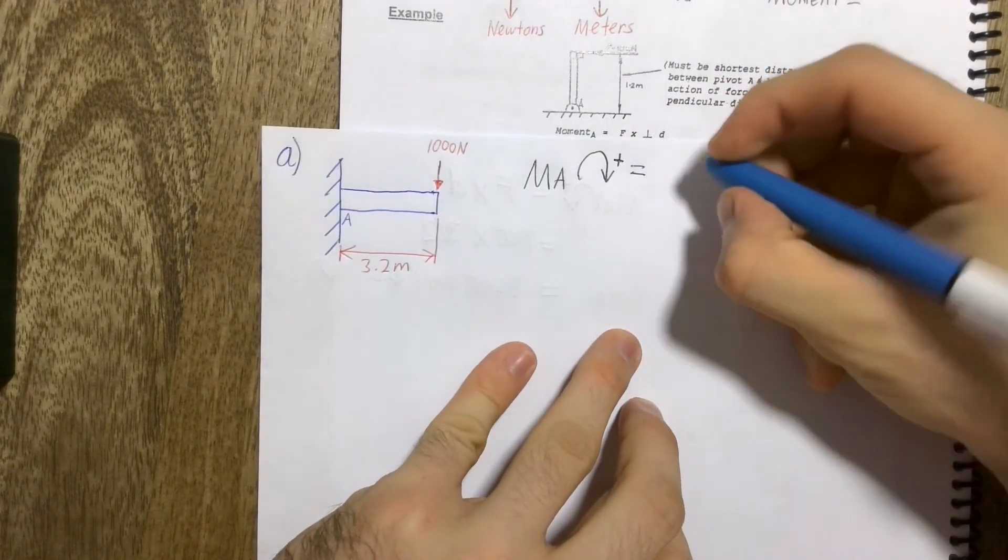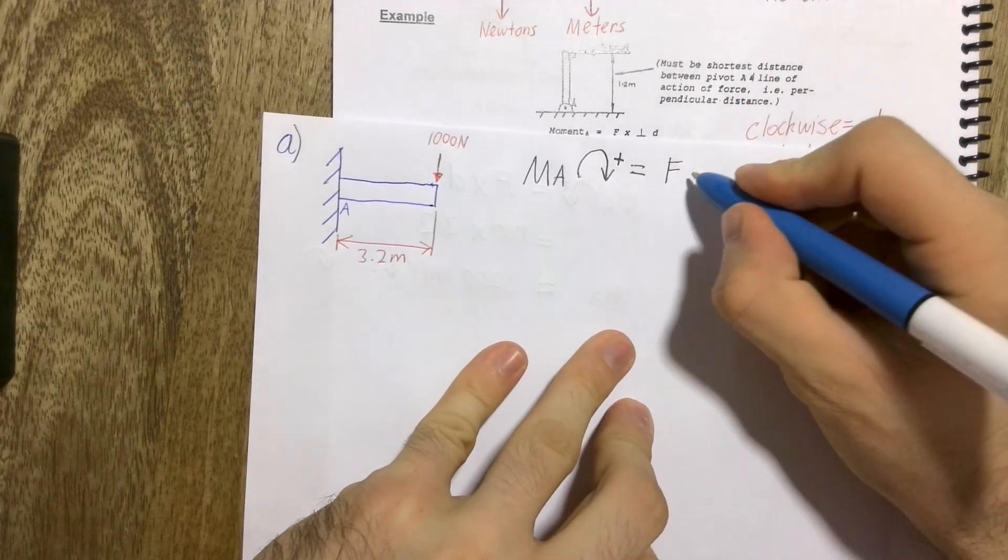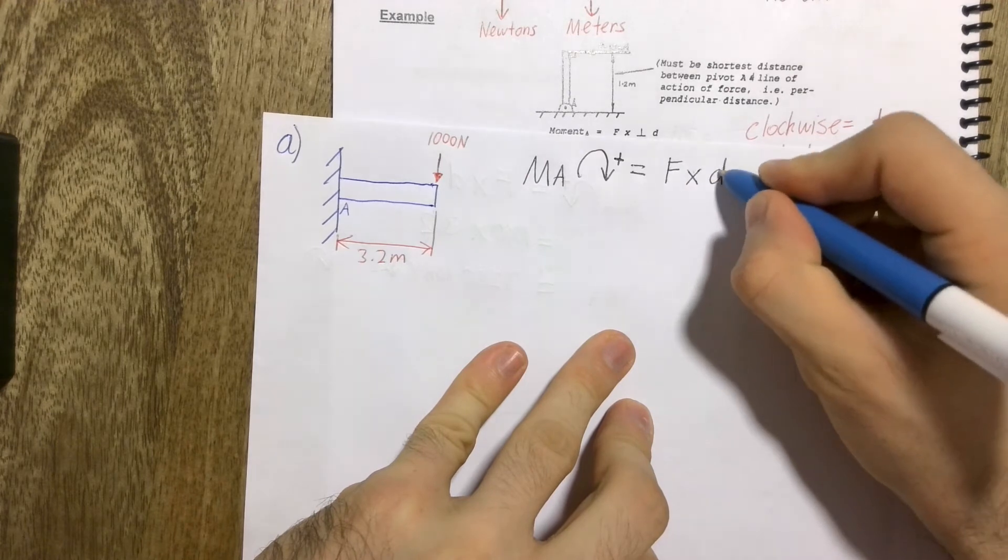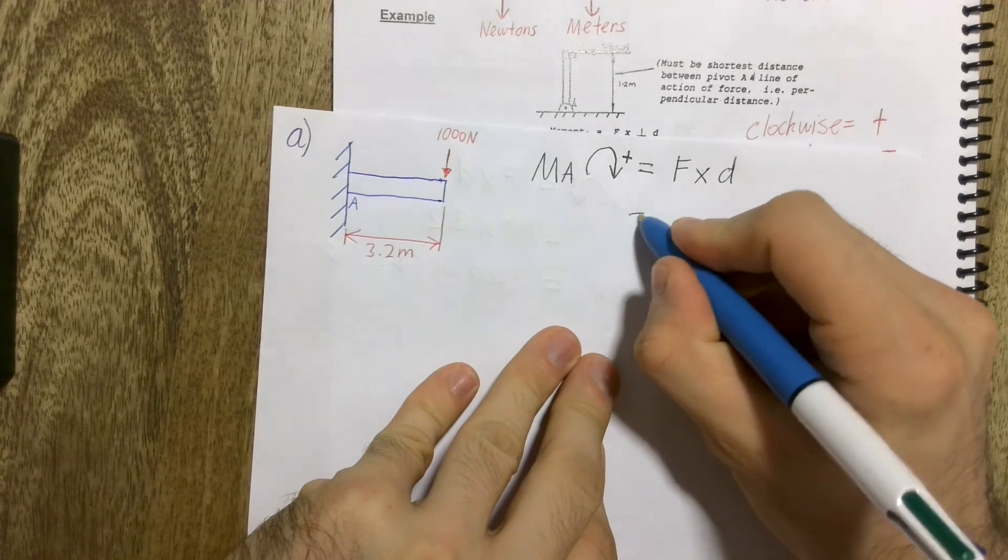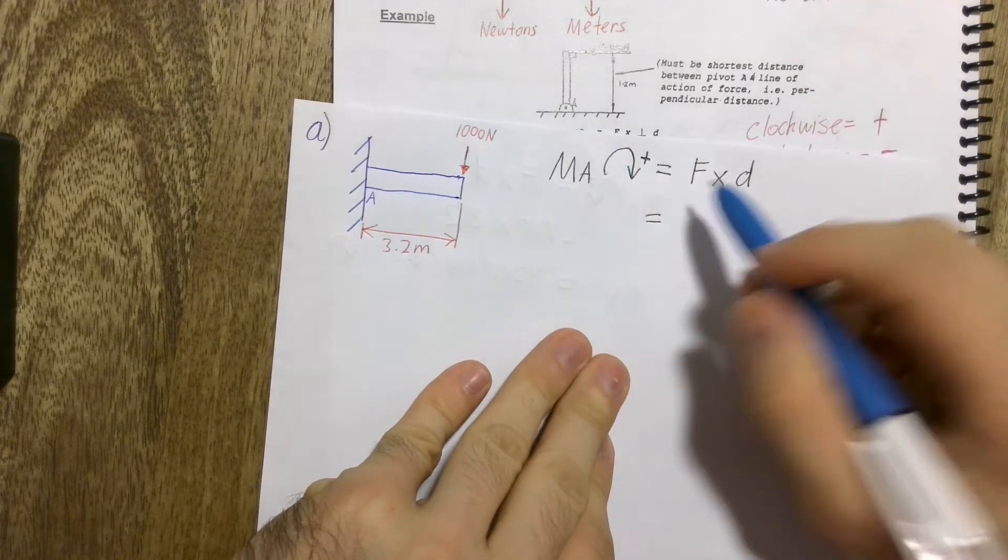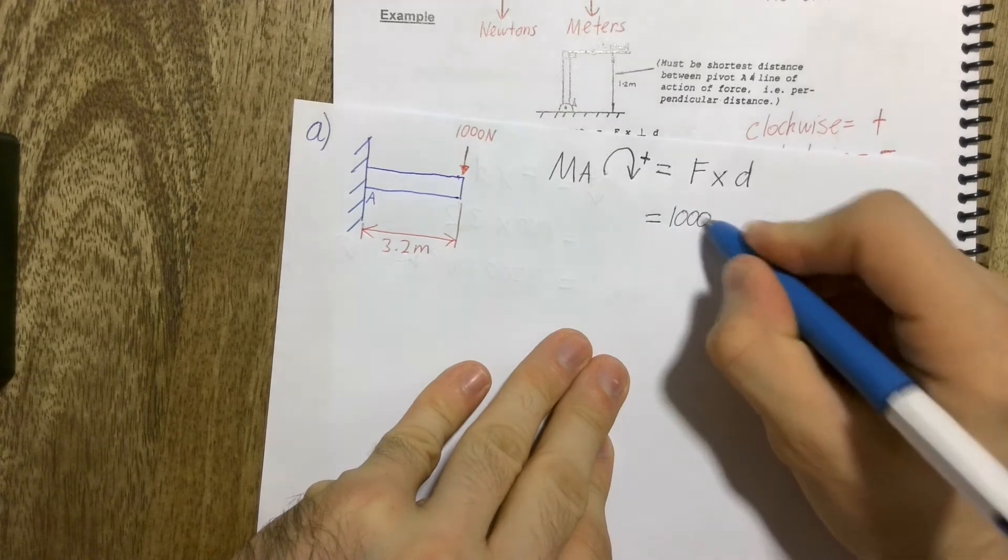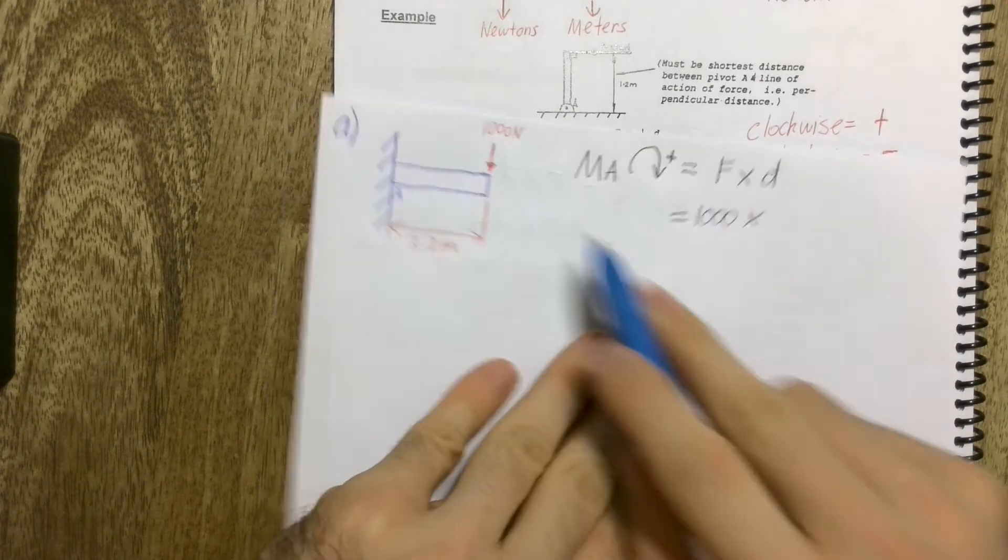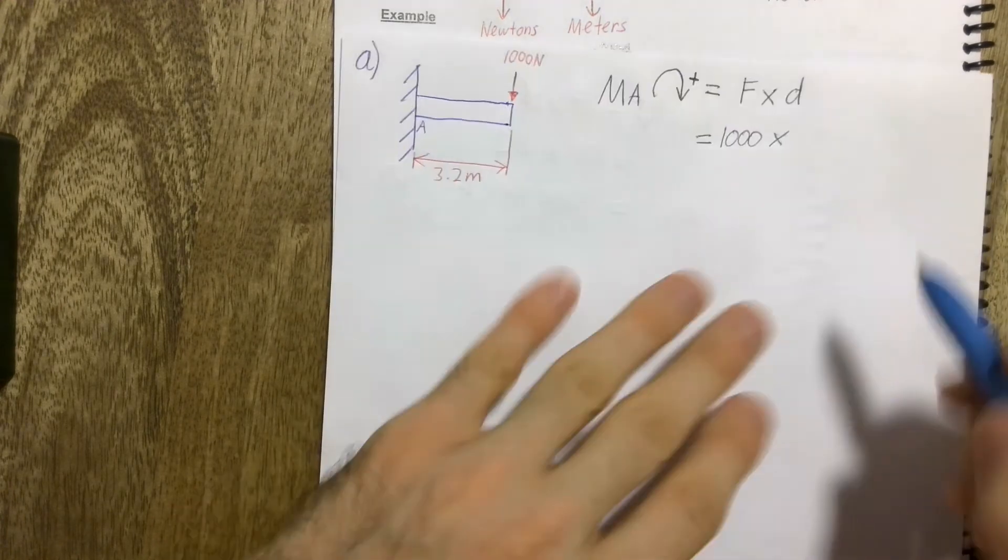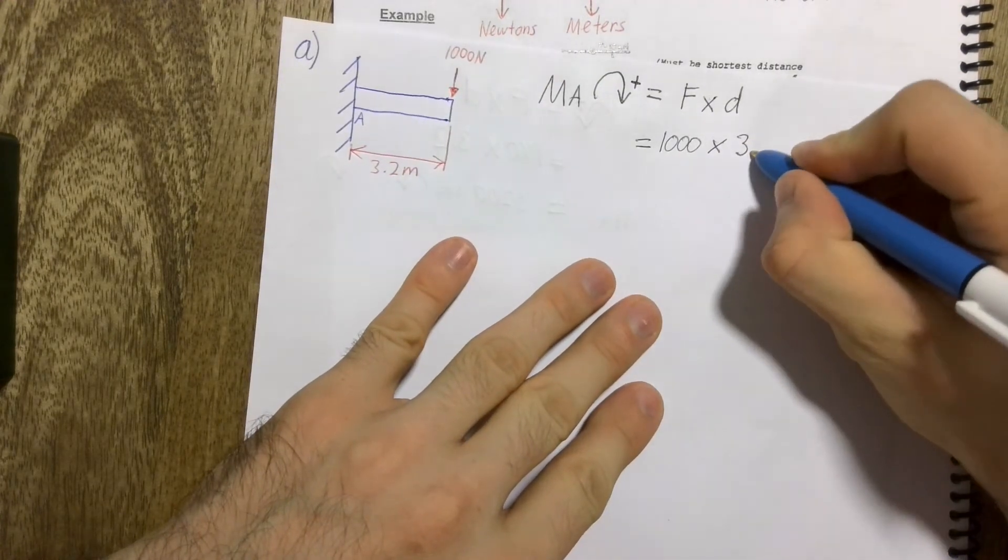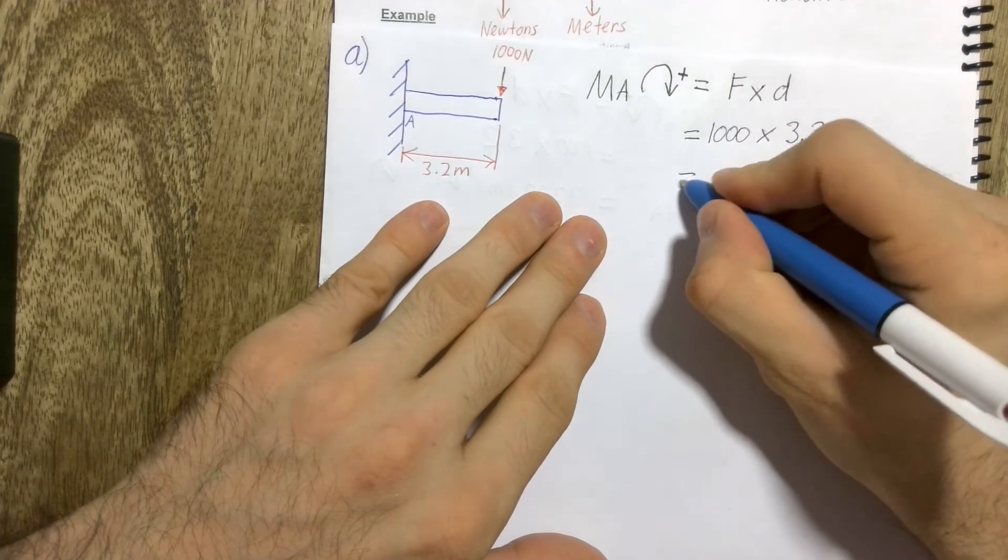So, we then finish our formula, which is force multiplied by distance. Now we go to our next part. So we know our forces are positive, so we add in a positive 1000 newtons multiplied by the distance. Now the distance is already in metres for us, so that's handy. So we can just go 3.2, and now we find our answer.